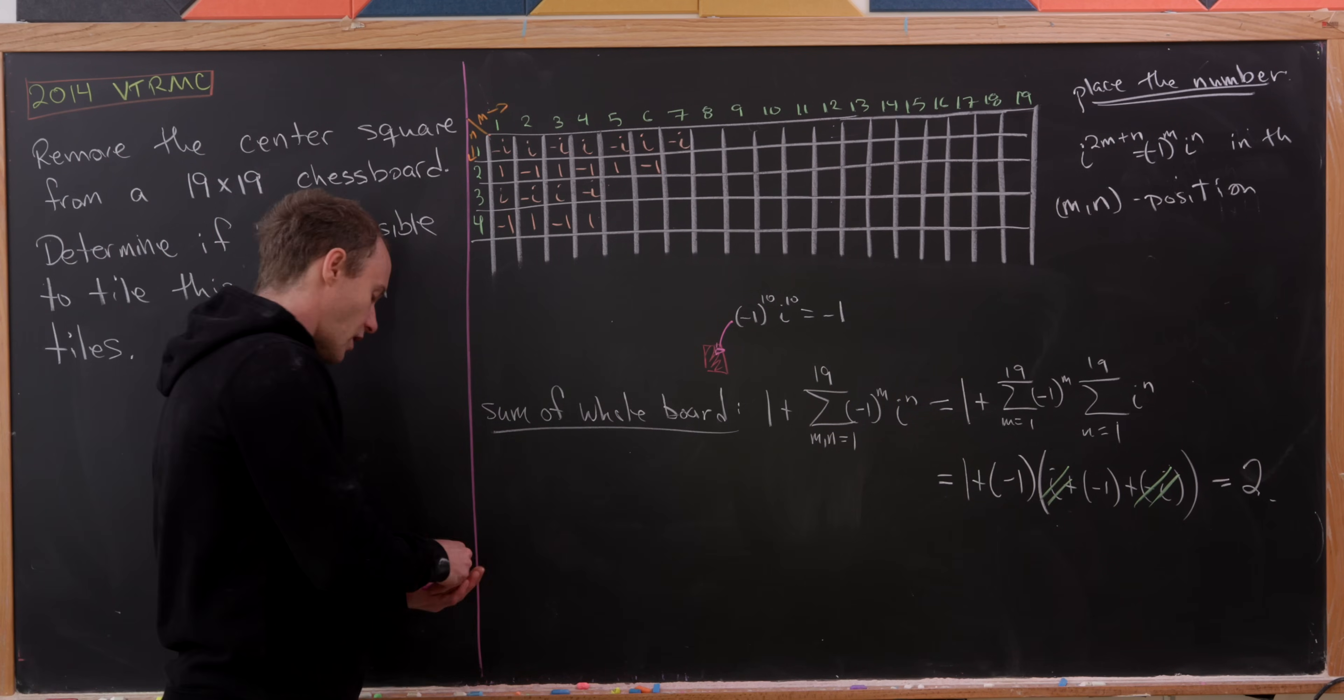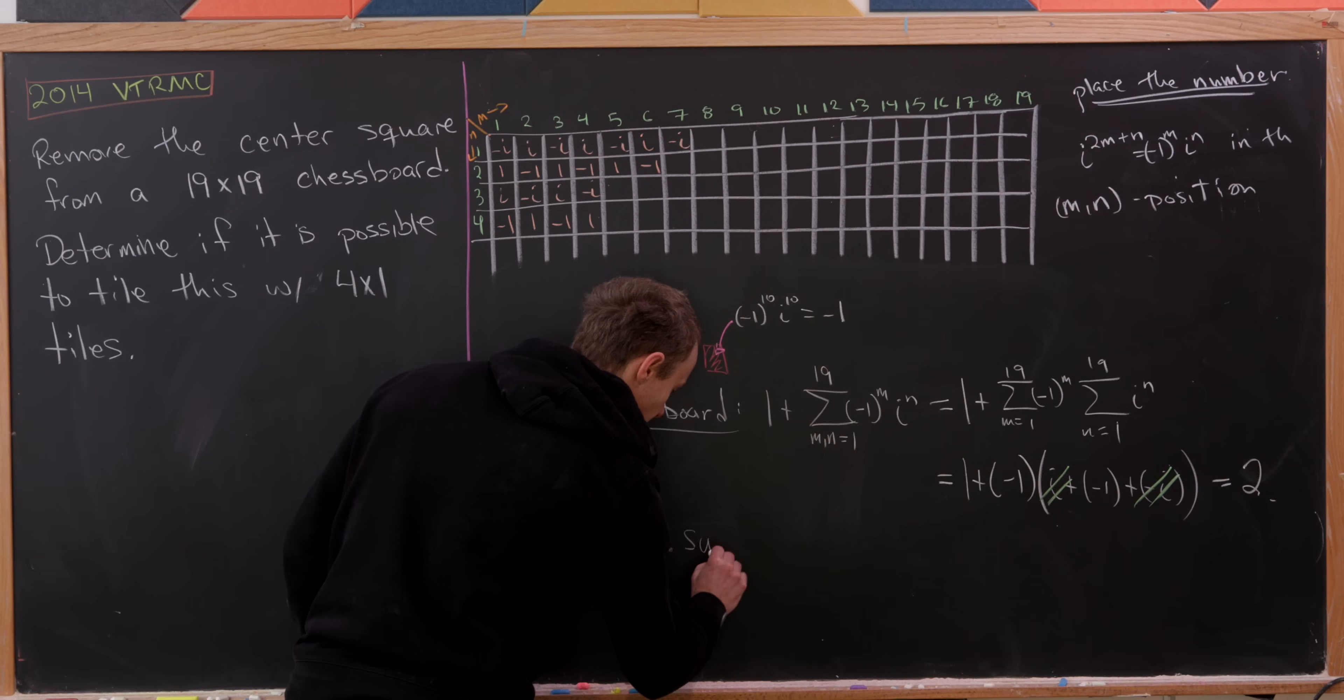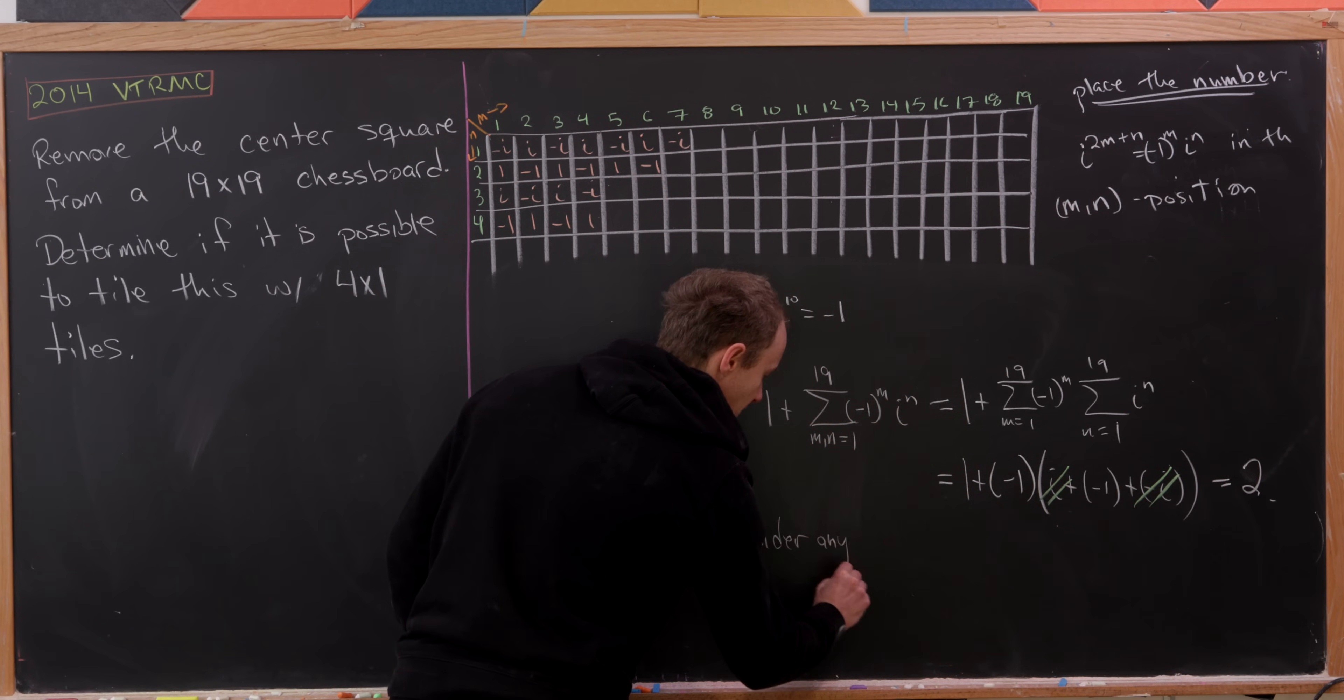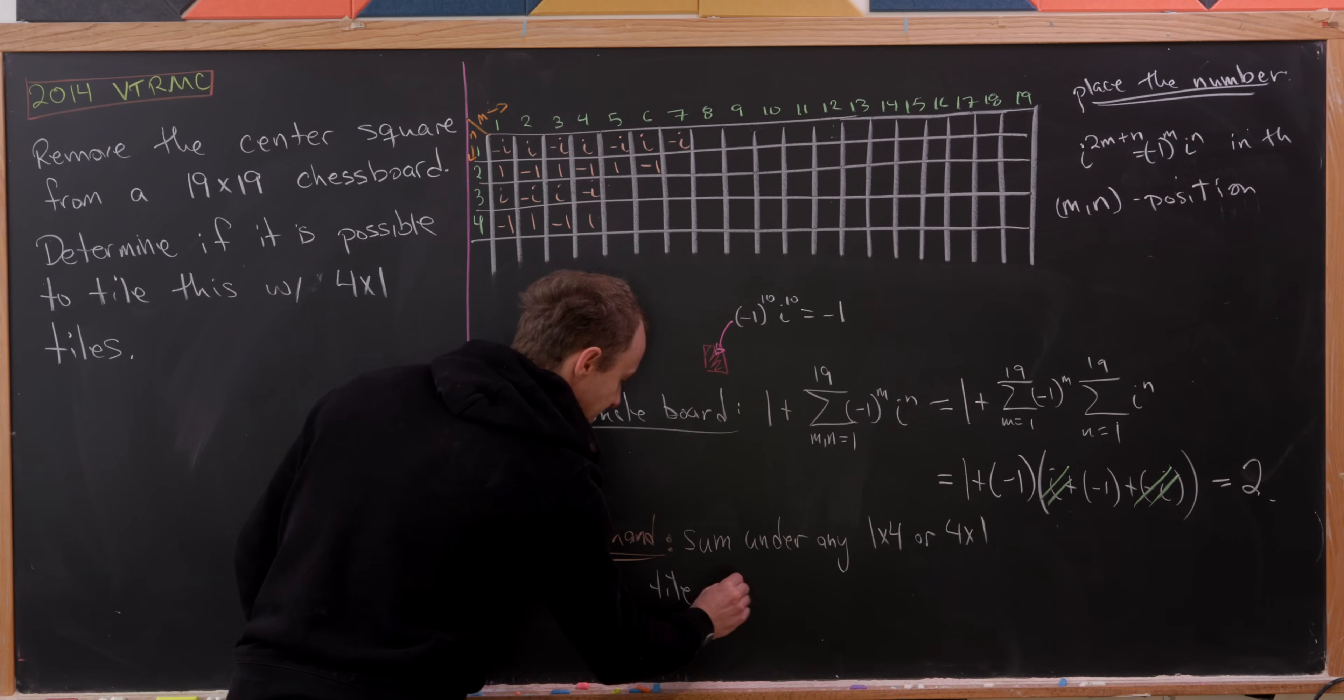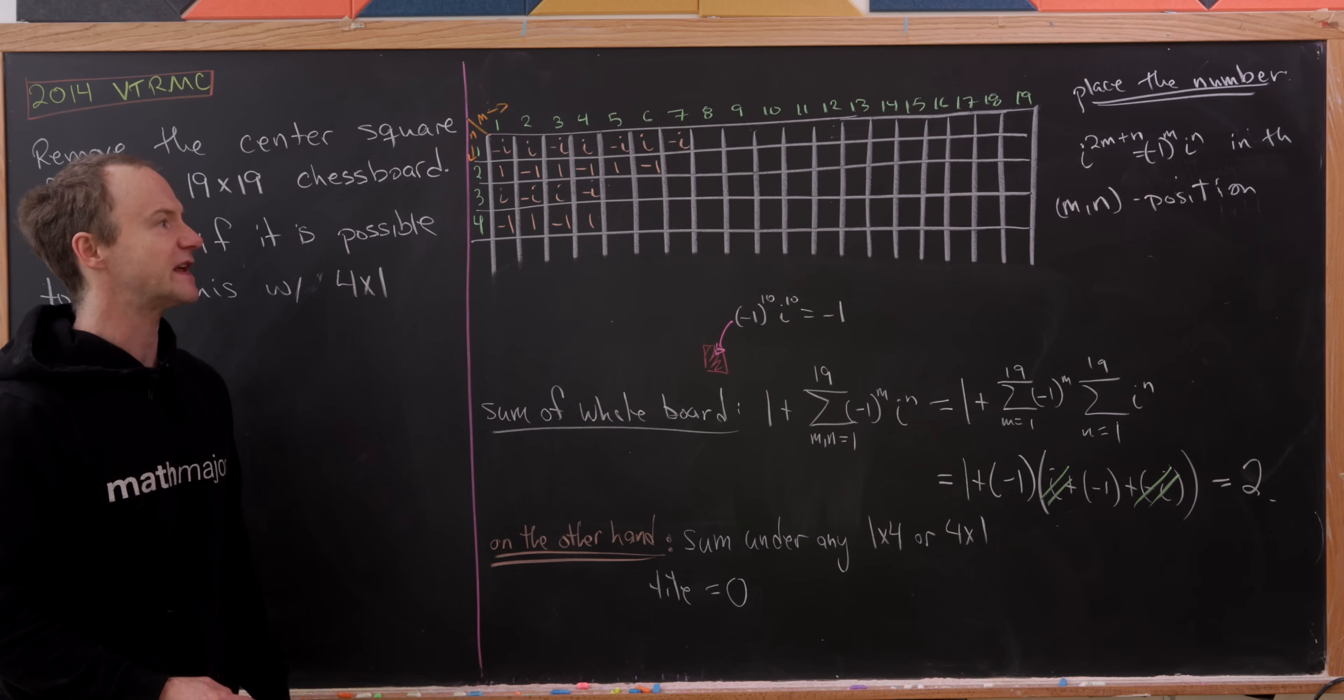But now, on the other hand, notice that the sum under any 1 by 4, or I guess I should say 4 by 1 tile, is equal to 0. So that's really pretty easy to check.